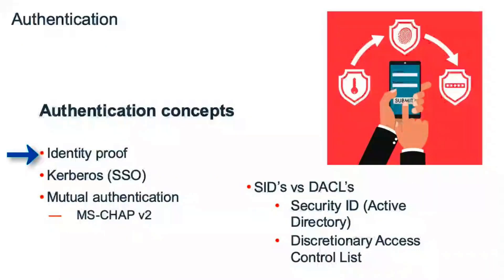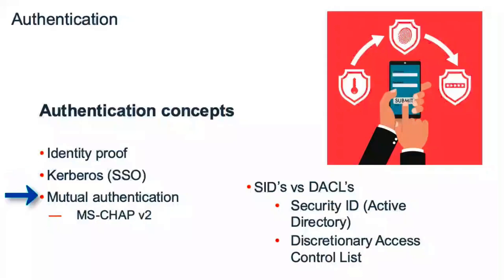There are some authentication concepts we need to understand. First is identity proof. Most systems will ask you for an identity and authentication. The username will be your identity proof — it identifies you and only you. After identifying yourself, you need to authenticate that you are who you say you are, and that is done through the password. The password gives you authentication, and your username gives you identification. Kerberos is a protocol used to implement single sign-on, and there are mutual authentication protocols like CHAP that rely on a secret or pre-shared key.